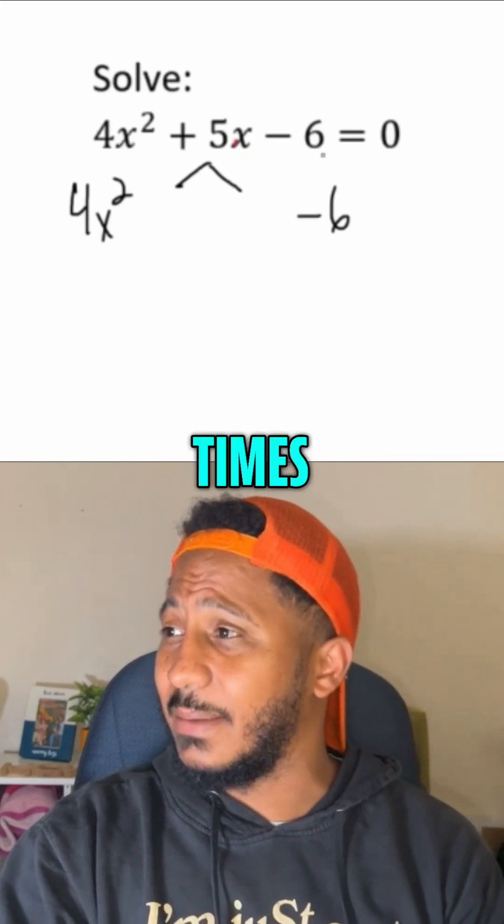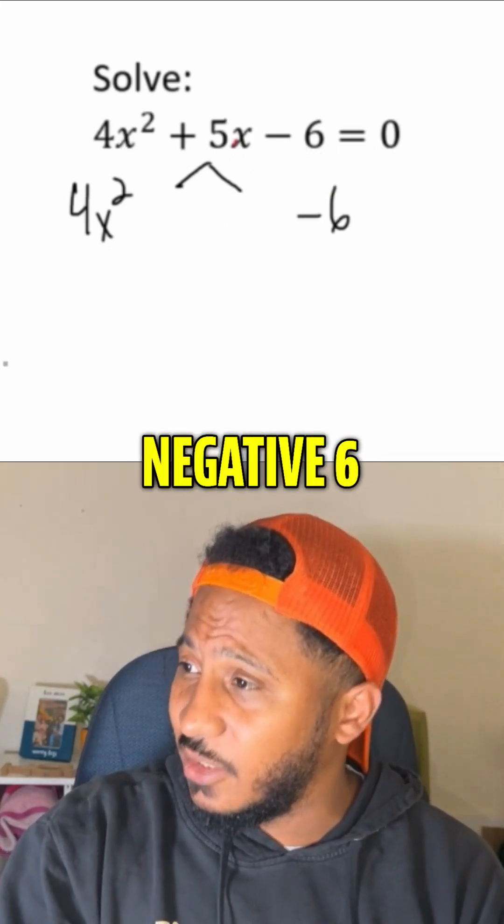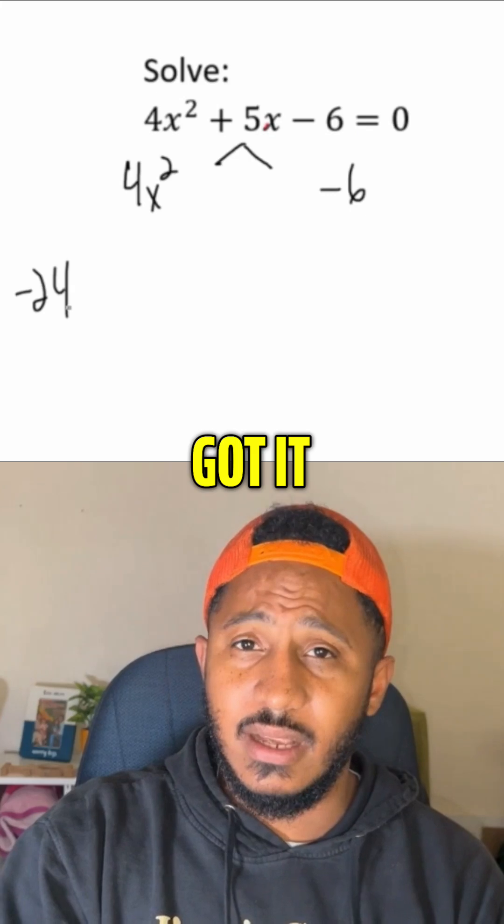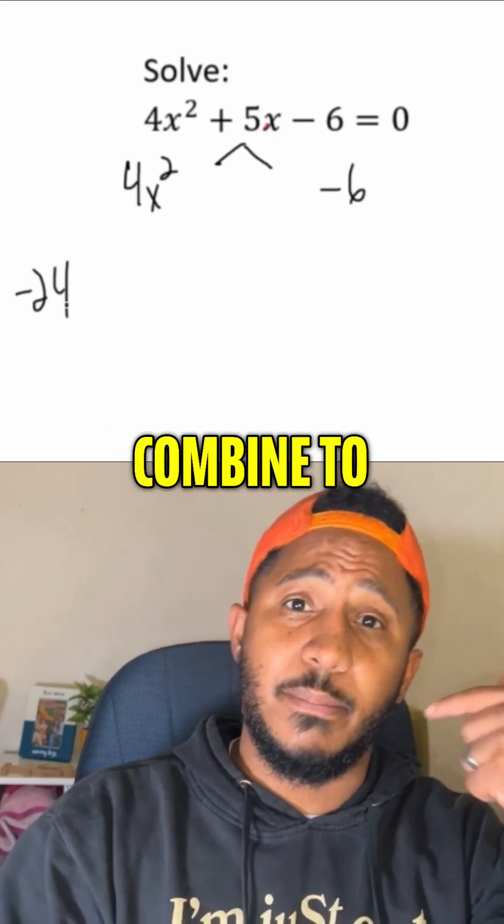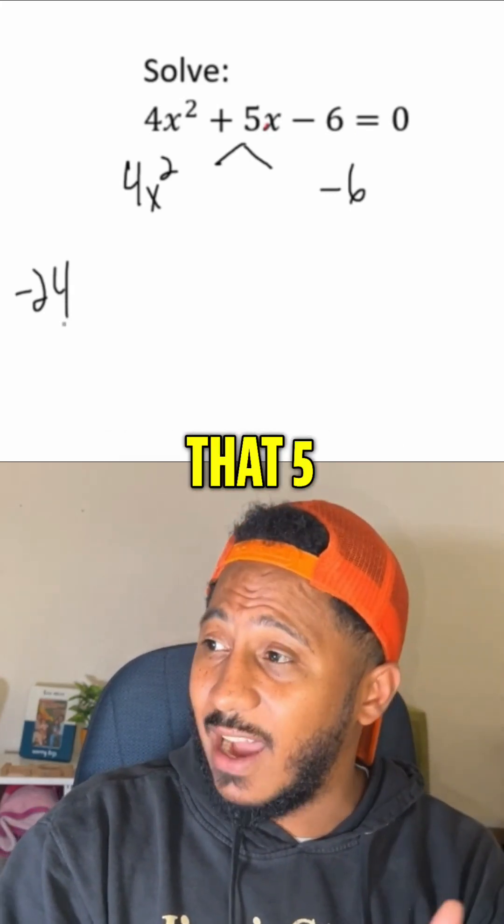Here, if I multiply A times C, that's the four times negative six. Four times negative six, we get negative 24. I need numbers that multiply to give me negative 24 to combine to give me that middle term, that five.